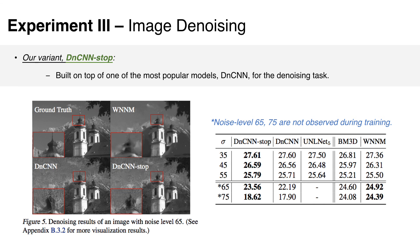The third experiment is image denoising. Built on top of DnCNN, which is one of the most popular models for image denoising, we propose DnCNN-stop, which can learn which layer to stop for different images. The model is trained on images with noise levels 35 to 55. The noise levels 65 and 75 are not observed during the training. However, it is surprising that our variant DnCNN-stop can perform much better than the baselines on this unobserved noise level. This shows that the stop policy can better model the variation in terms of noise level change.